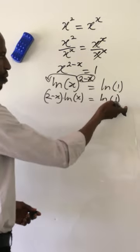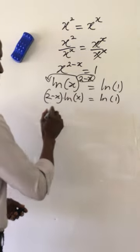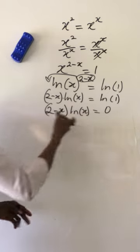Bringing this backward, natural log of 1 will give us 0. So apply the zero product rule.